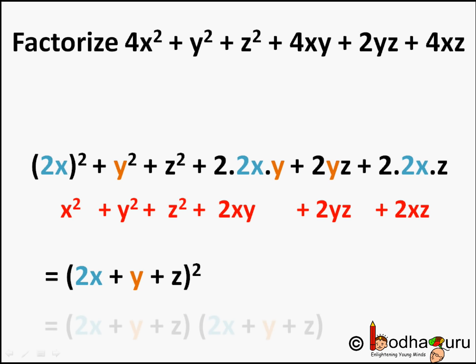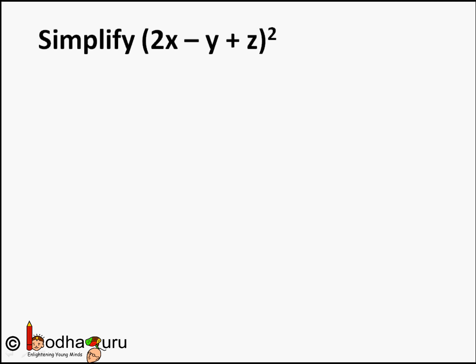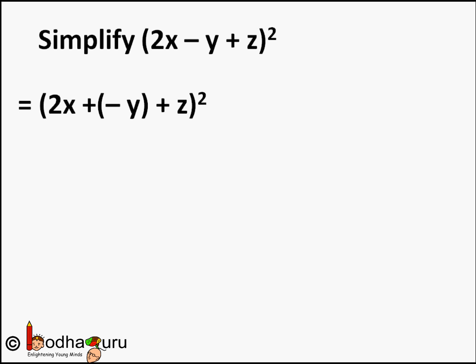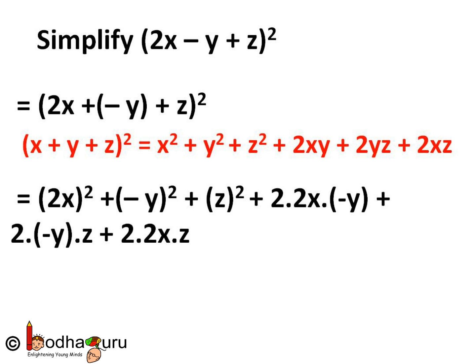Let us take another example. Say we need to find the value of 2x minus y plus z whole square. There are three variables. Can we use x plus y plus z whole square? Here there is a negative sign — don't worry about it. We can write minus y as plus of minus y, so now it is in the form x plus y plus z whole square, where 2x is the first term, minus y is the second term, and z is the third term.